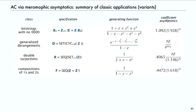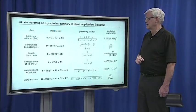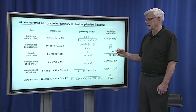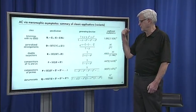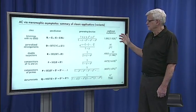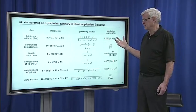Same with the surjections and for compositions all different types of restrictions and as well as denumerates. All of those things are the same basic idea of a spec goes to a generating function, goes to coefficient asymptotics immediately.